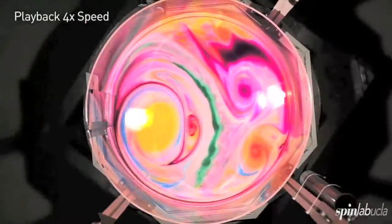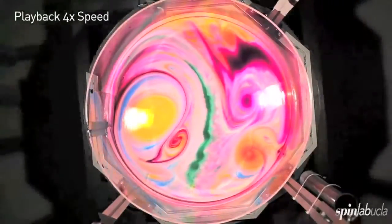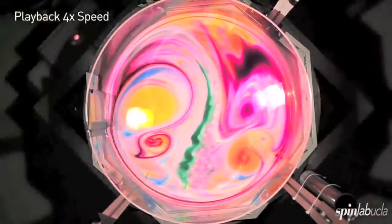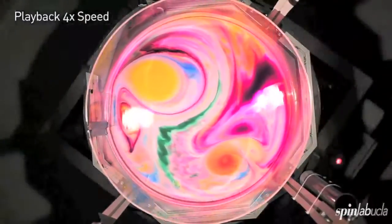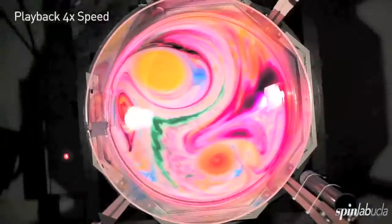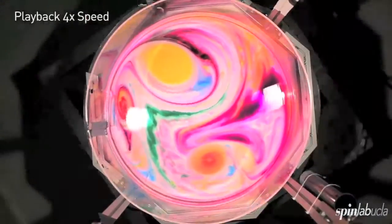And this is because all the structures in this flow are aligned along the rotation axis, just like we saw in the rotating creamer experiment. So these aligned structures have trouble mixing in 3D because they're largely 2D structures.